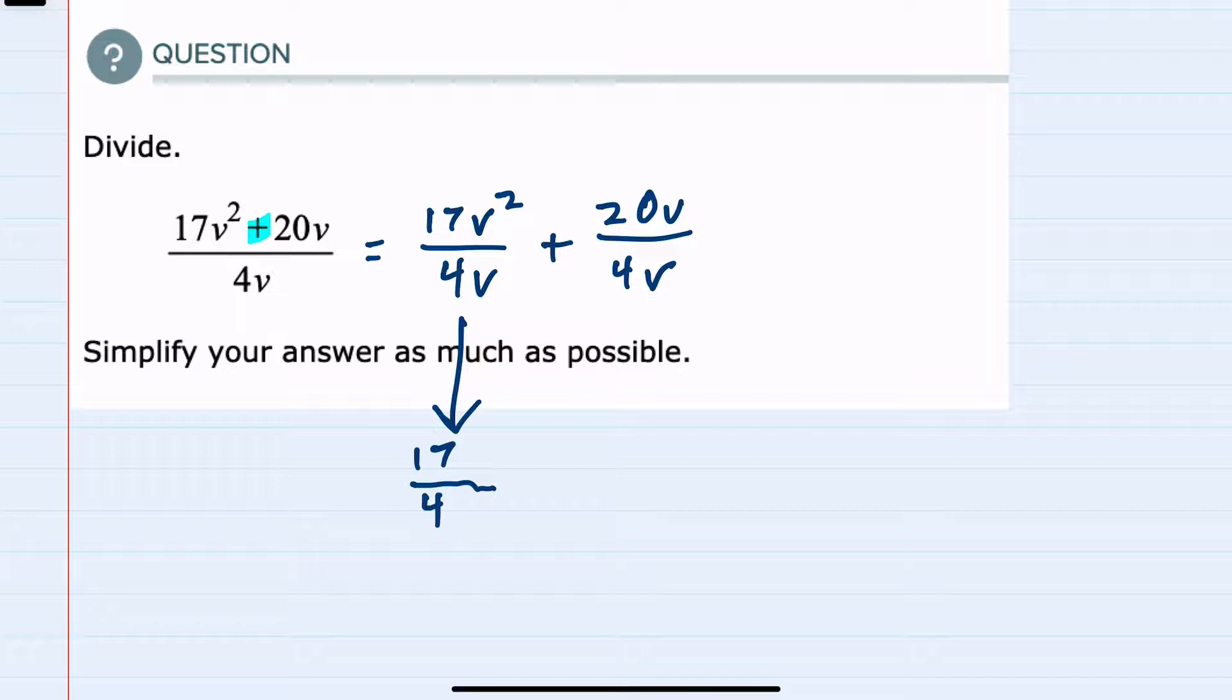However for the variables we have one v in the denominator and two v's in the numerator, so we can say that this v cancels one of those v's and I'm left with just a single v in the numerator.